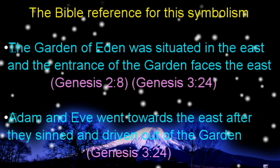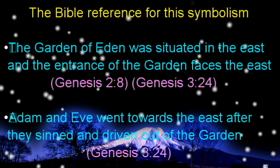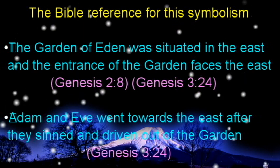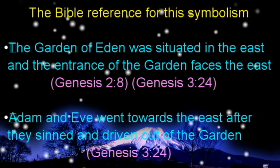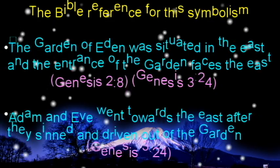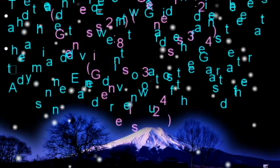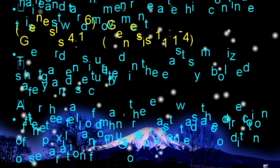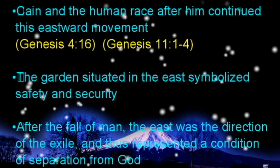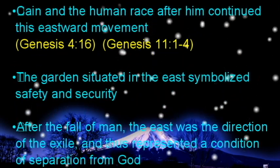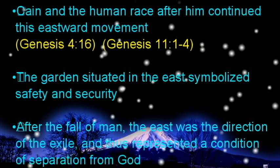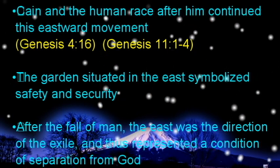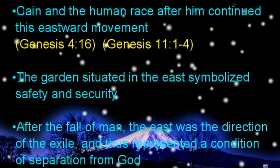Read Genesis 2 verse 8 and Genesis 3 verse 24. Adam and Eve went towards the east after they sinned and were driven out of the garden. Read Genesis 3 verse 24. Cain and the human race after him continued this eastward movement. Read Genesis 4 verse 16 and Genesis 11 verse 1 to 4.